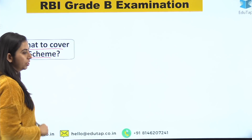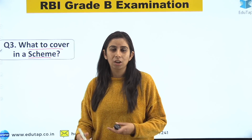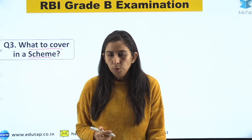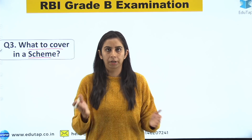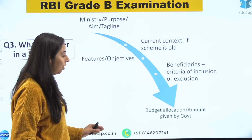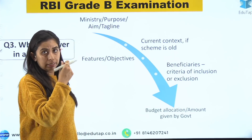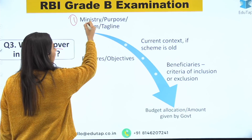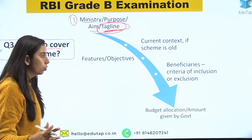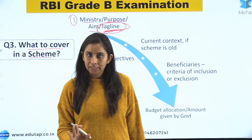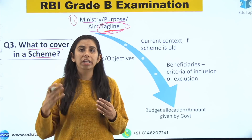A very important question: what to cover in a scheme? When you open a scheme — say, from the ministry website or a booklet — a lot of information is given. There is a difference between different exam requirements. For your RBI exam, the must-cover things are: the ministry of the scheme, its purpose or aim, and its tagline. Why the tagline? A ministry has launched the scheme — which ministry, what is the tagline — these things you have to cover. Recently, 'Swastadhara' and 'Khedhara' were asked in NABARD. Go for the taglines — they'll help you recall the purpose of the scheme easily.